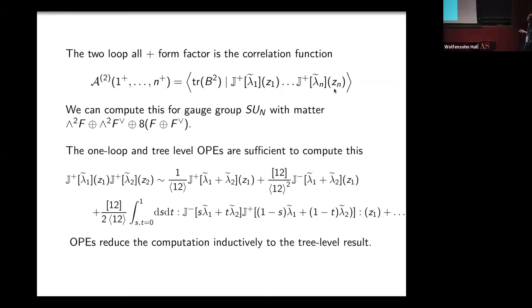It's much more interesting to study the loop level. The two-loop all-plus form factor is the two-loop correlator of the same operator where I insert only positive helicity states. I'm going to compute this for gauge group SUN with special matter. The way we do this is the familiar 1980s bootstrap. We look at the possible OPEs. It turns out the one-loop and tree-level OPEs are sufficient.